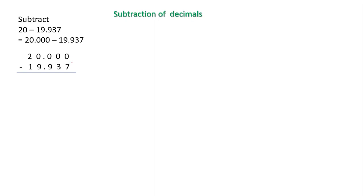Now I will do the subtraction. In the thousands place, zero is smaller than seven, so I have to borrow from the hundreds place. From the hundreds place also I can't borrow, so I move to the tens place. In the tens place there is also a zero, so I can't borrow. I move to the ones place — there is also zero there, so I move to the tens place where there is a two.